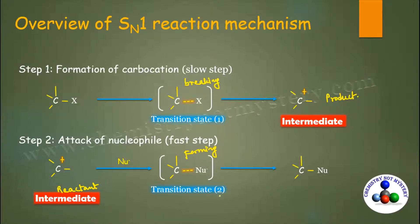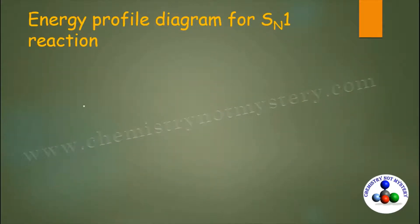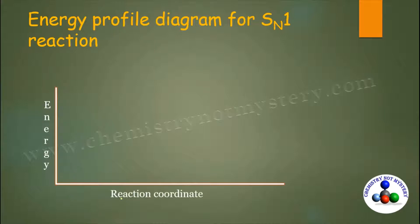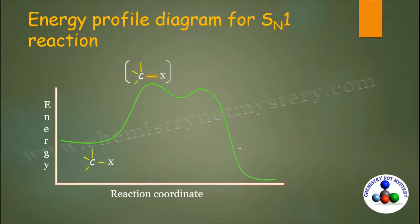Now let's draw an energy profile diagram for SN1 reaction mechanism. We draw reaction coordinate on the x-axis and energy on the y-axis. We can divide this graph into two equal halves — the first half represents the first step of the reaction and the second half represents the second step.